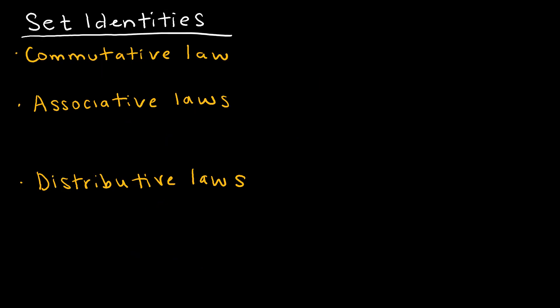The commutative law says if you have A union B you'll end up with the same result as B union A, essentially saying it doesn't matter the order in which you take the union. It also doesn't matter the order in which you take the intersection, because those concepts are not dependent on order.